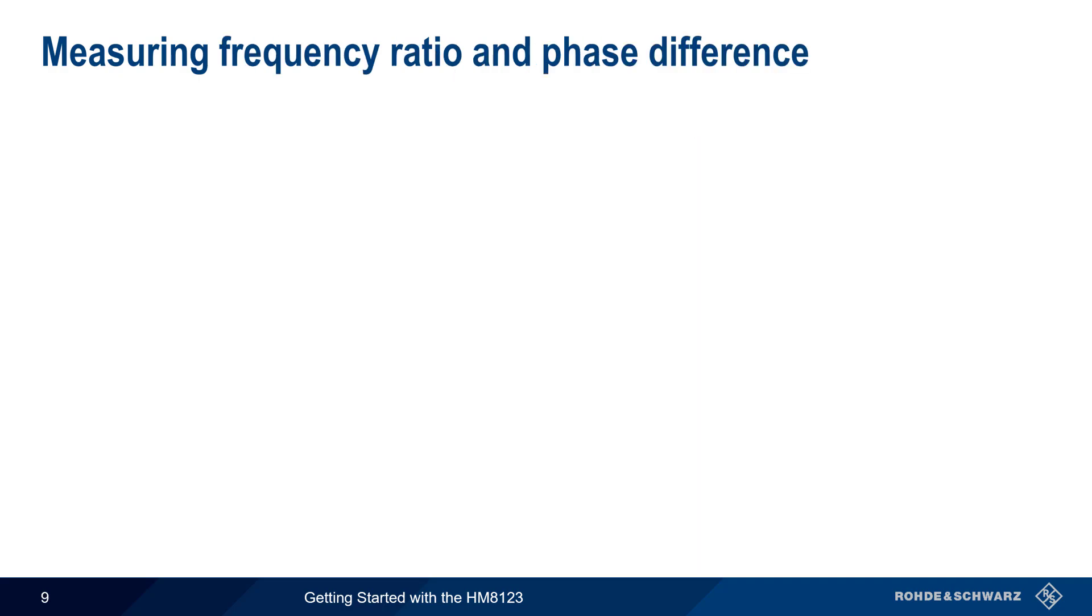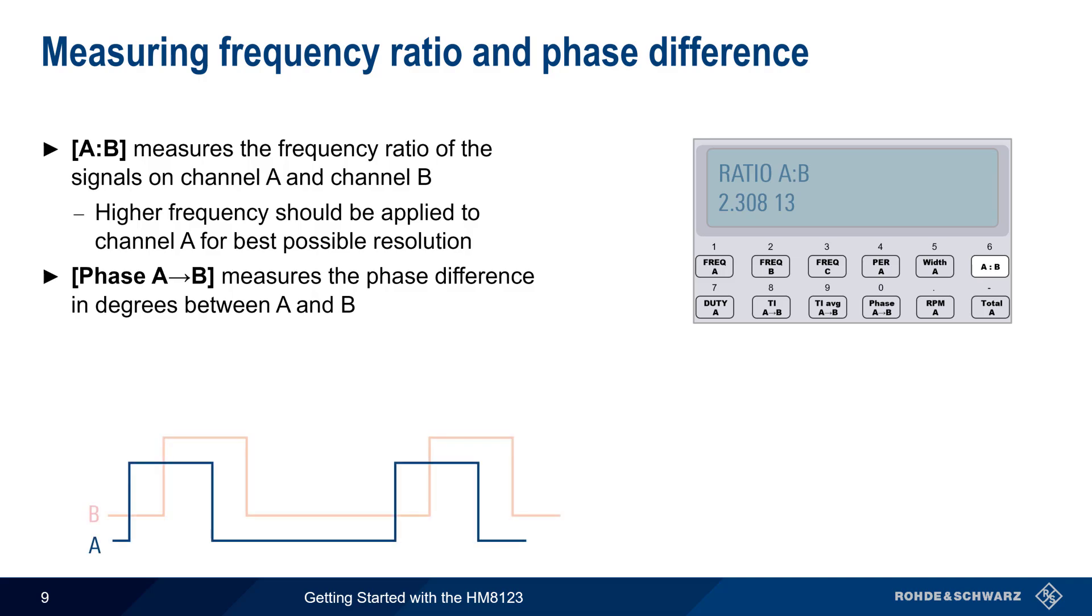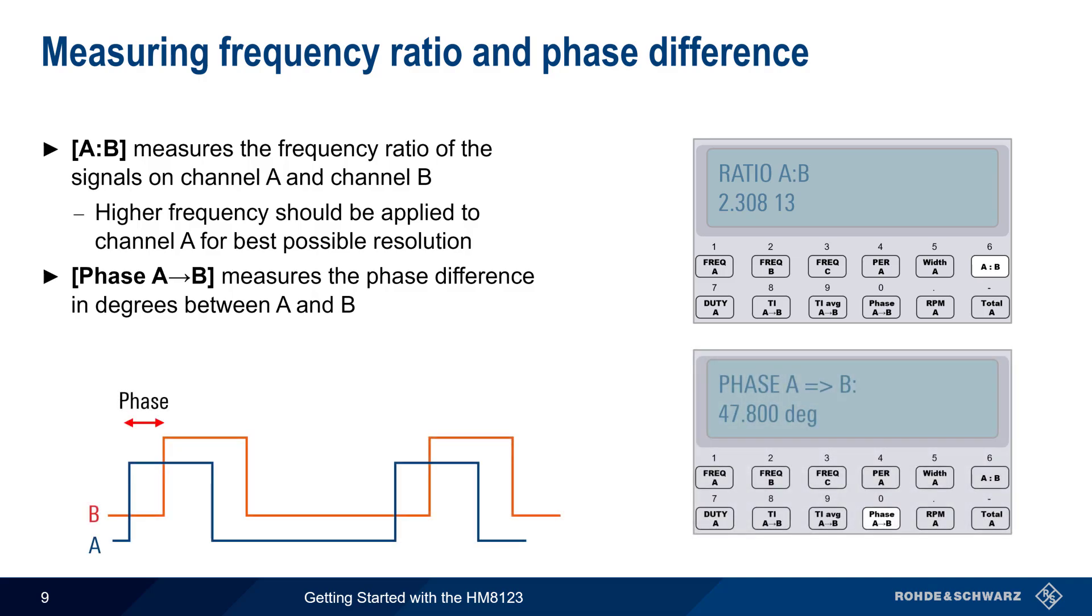Next we'll look at the frequency ratio between inputs A and B, which is enabled using the AB key. Note that the best accuracy is obtained if the higher frequency is applied to channel A. The phase AB button measures the phase difference in degrees between the A and B inputs. Unlike frequency ratio, this phase difference measurement is only possible on square wave signals.